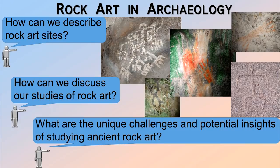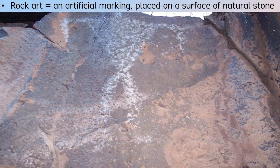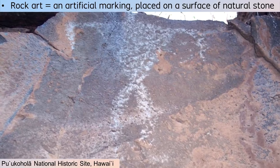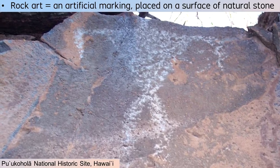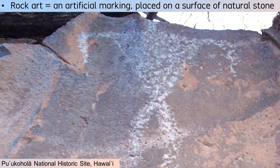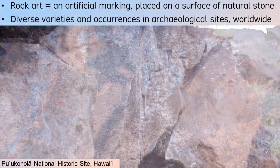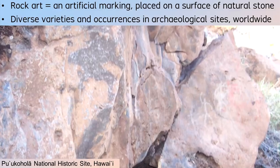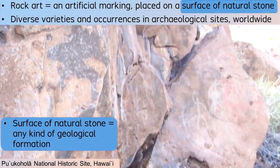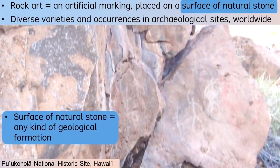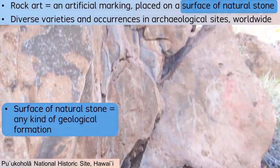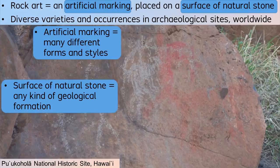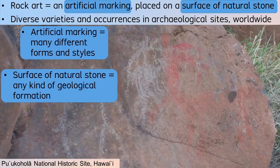The simplest definition of rock art involves any artificial marking placed on a surface of natural stone. This general-purpose definition can accommodate different kinds of rock art. The surface of a natural stone could be any kind of geological formation, and the artificial marking could occur in many different forms and styles.